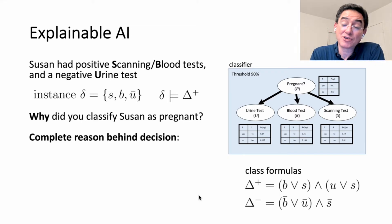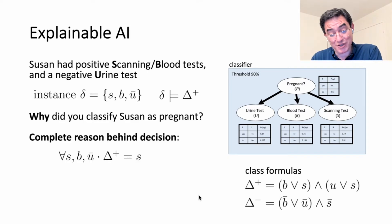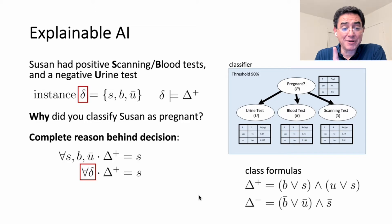We can answer this why question by computing the complete reason behind a decision. This is a notion that was introduced about two years ago. It is a sufficient and necessary condition behind the decision. What we showed is we can get that complete reason by quantifying the literals of the instance from the corresponding formula, as shown in this equation. The result of this quantification here is a simple formula that says scanning is positive. That's the complete reason. It's telling us the reason Susan was classified as pregnant is because she tested positive for scanning. The other two tests did not matter.